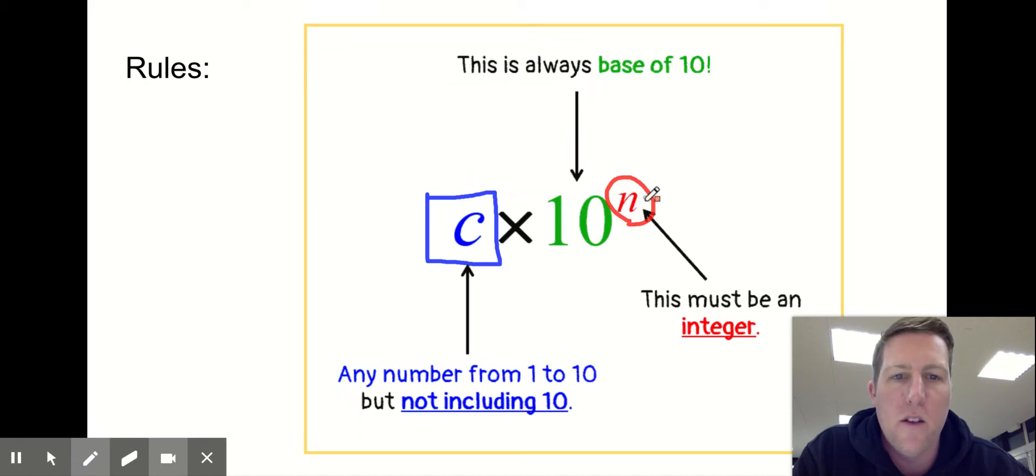This cannot be a decimal - it has to be a whole number. And it could be negative also, which we're going to talk about. So positive or negative number here, it cannot be a decimal. This one could be a decimal, and it's going to be a number between 1 and 10. It has to be. And then we always write times 10 to the power of something.